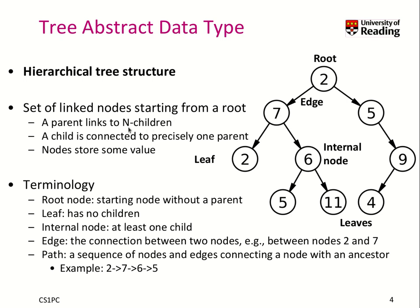So depending on the type of tree you have, you typically have up to n children, where n is defined. And a child is connected such that when you go from a child to exactly one parent. So you will find that there is exactly one path from one leaf to the root, and this path is unique.